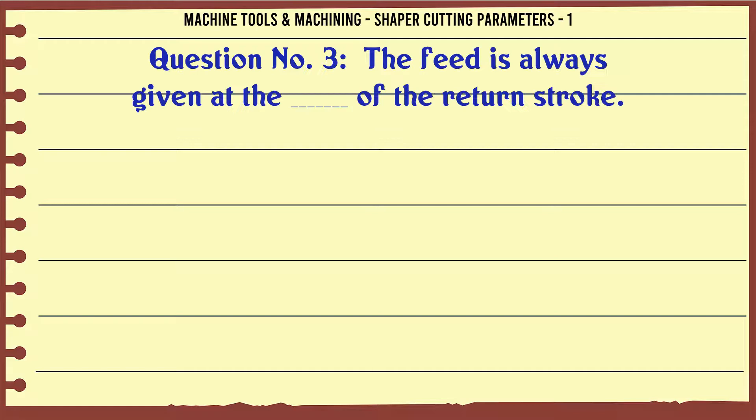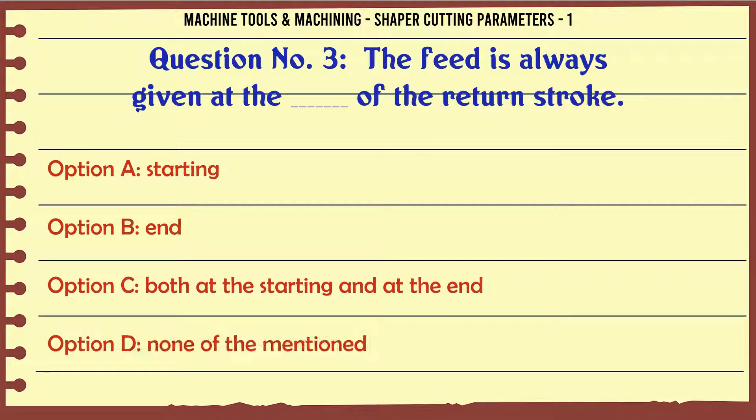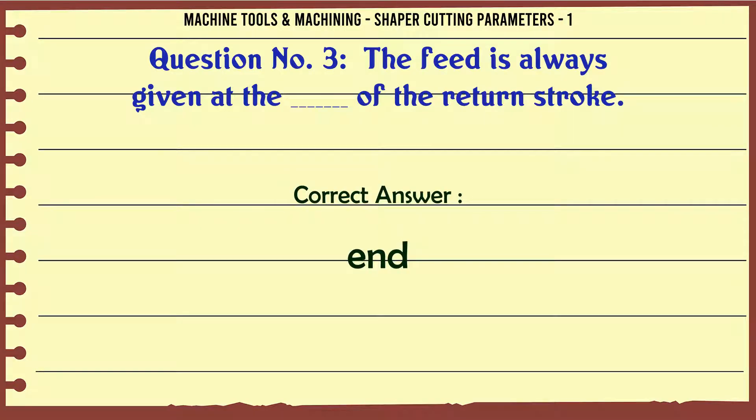The feed is always given at the ___ of the return stroke. A. Starting. B. End. C. Both at the starting and at the end. D. None of the mentioned. The correct answer is: End.